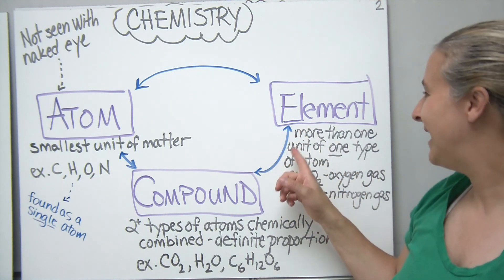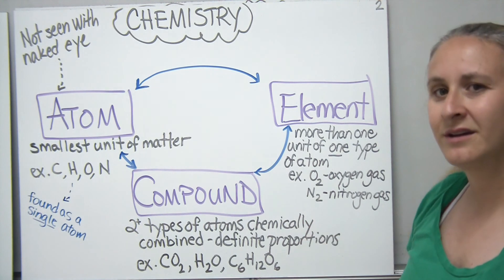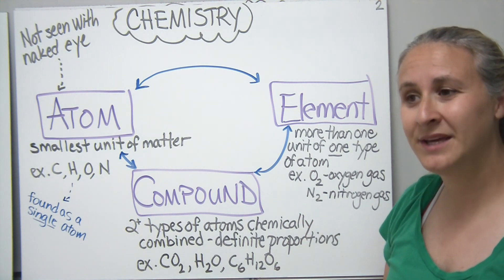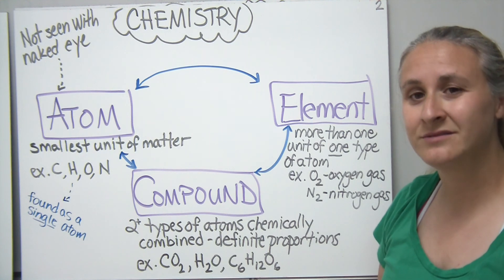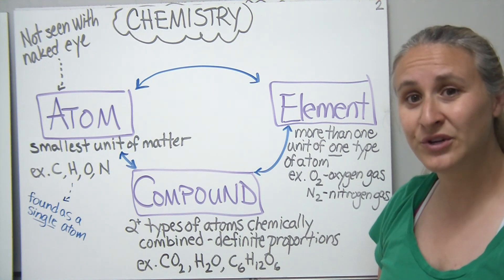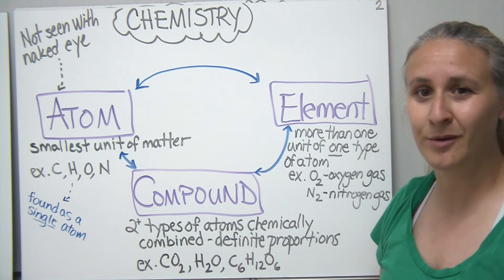If that would be an element. An element is more than one unit of a single type of atom. So some examples of that would be the oxygen that's in the air. It's not just one atom of oxygen that we're referring to. We're referring to two oxygen atoms that are bonded together.